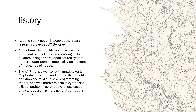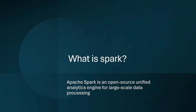The AMP lab worked with multiple people who were using MapReduce to understand what the drawbacks were and what was wanted. A number of use cases were discussed, and then the evolution of Spark came in as an answer to the problems that MapReduce was facing. This is how Spark started in 2009. Simply defined, Spark is an open source unified analytics engine for large scale data processing.